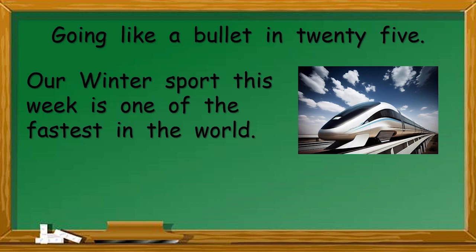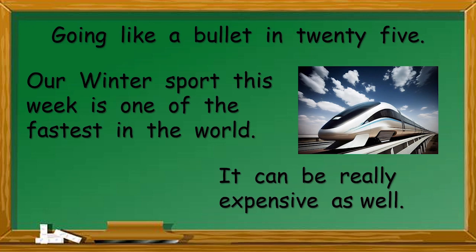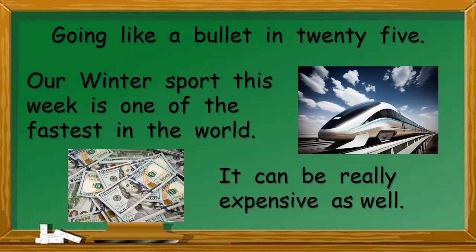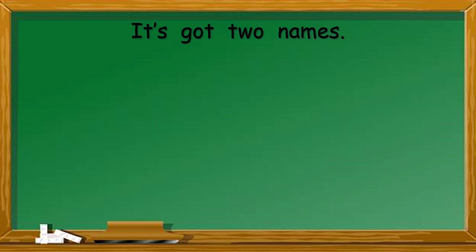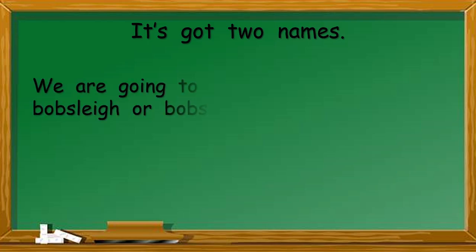Can it be that fast? It can be really expensive as well. Very, very, very fast, very expensive. What could it be? Now this is a bit of a problem — it's got two names. They're very similar though. We're going to look at bobsleigh, or bobsled.